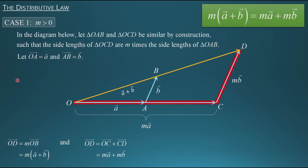Notice what we have here: two ways of expressing vector OD. One way is m times vector A plus B, and the other is m times vector A plus m times vector B. Since these are both ways of expressing vector OD, we can conclude that m times vector A plus vector B is the same as m times vector A plus m times vector B — and that's the distributive law. Note that in this case triangle OCD ended up larger than OAB, meaning m was greater than one. If m were between zero and one, the smaller triangle would be OCD, but the same arguments would follow.